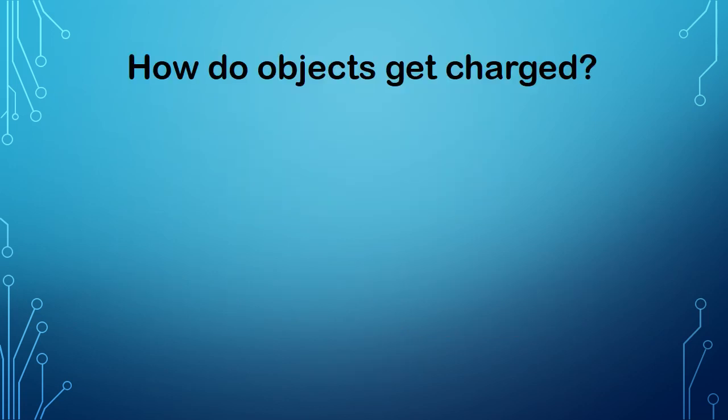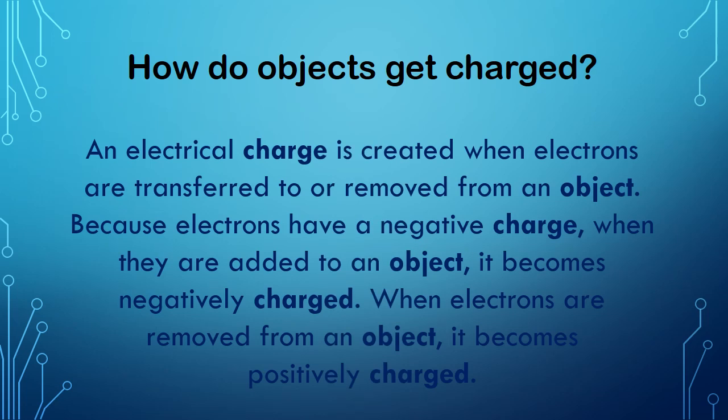How do objects get charged? Think students. An electrical charge is created when electrons are transferred to or removed from an object. Because electrons have a negative charge, when they are added to an object, it becomes negatively charged. When electrons are removed from an object, it becomes positively charged.